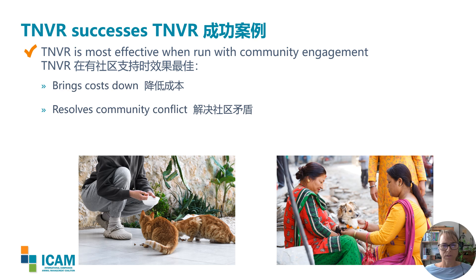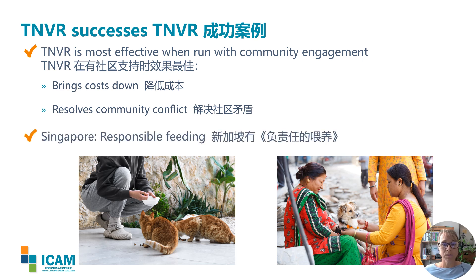The most effective TNVR happens with community engagement — working with the public to find volunteers to support TNVR efforts, of whom there are often many available. This brings costs down and helps tackle conflict between citizens, bringing greater harmony to communities. Such benefits have already been achieved by the pilot TNVR work happening in Shanghai, led by local NGOs. Singapore in particular has had success working with dog and cat feeders. Rather than banning feeding — which fails because feeders are strongly motivated and will fuel community conflict — Singapore's authorities define and demand that feeding is done responsibly, working with animal welfare groups to establish responsible feeding expectations paired with funded sterilisation programmes.